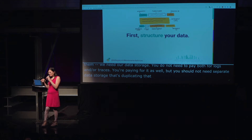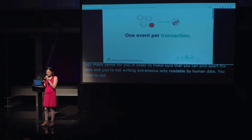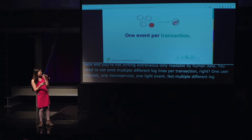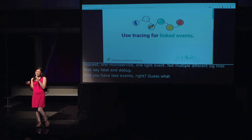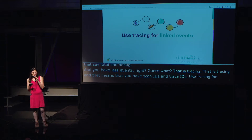This means we need to structure our logs — emit wide structured events, emit JSON format or whatever format makes sense for you, so you can pick apart the data and you're not writing extraneous human-only-readable data. Don't emit multiple different log lines per transaction. One user request, one microservice, one wide event — not multiple different log lines with fatal, info, and debug. Attach structure: one event per transaction. And if you have linked events, that is tracing. That just means events with parent IDs, span IDs, and trace IDs. Use tracing for your linked events and you'll be storing your data efficiently, not duplicating it, and keeping only the data you need.